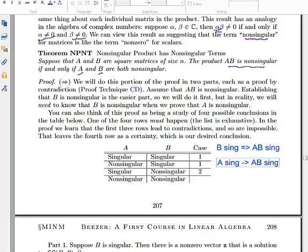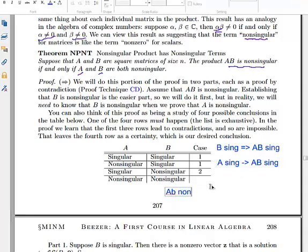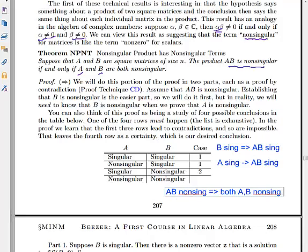These two together imply the following statement: AB is non-singular implies both A and B are non-singular. This is because AB non-singular implies B non-singular is the contrapositive of the first statement, and AB non-singular implies A non-singular is the contrapositive of the second statement. So from these two statements we can conclude the combined result via contrapositives.